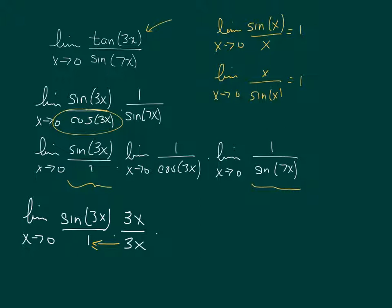This piece right here, I can go ahead and just plug in 0. So I'm going to have 1 over cosine of 3 times 0, which is 1 over the cosine of 0, which is just 1, because the cosine of 0 is 1, so 1 over 1.